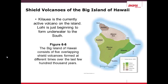One of the types of volcanoes is a shield volcano. An example is Mount Kilauea, currently an active volcano on the island of Hawaii. The new volcano on this island is called Loihi, in the southern part. The island of Hawaii, also called the Big Island, consists of five overlapping volcanoes which formed over a few hundred thousand years.